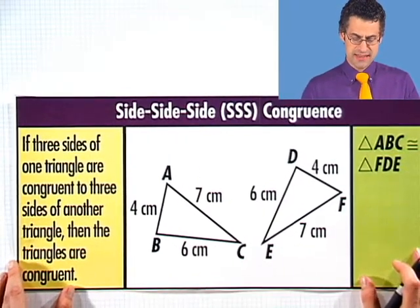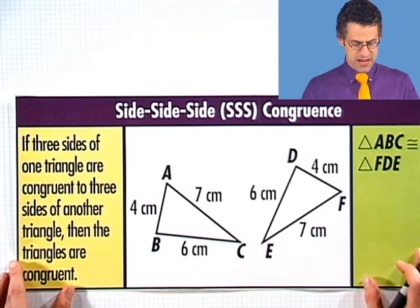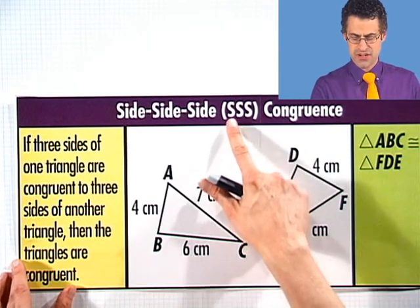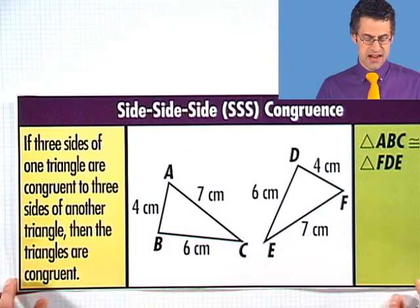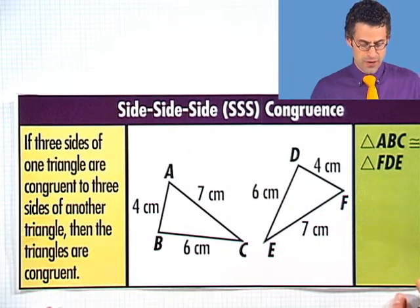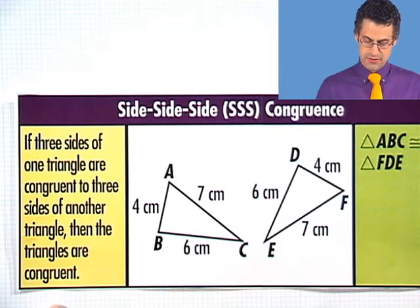This one is known as the side-side-side congruence, sometimes abbreviated as SSS. It says that if three sides of one triangle are congruent to three sides of another triangle, then the triangles are congruent.